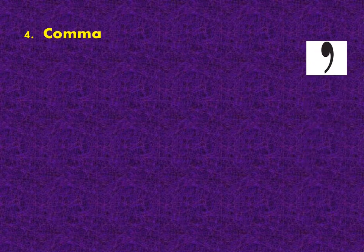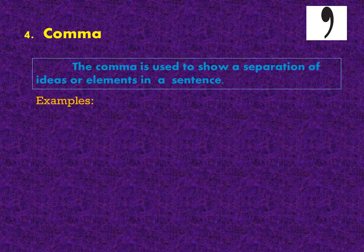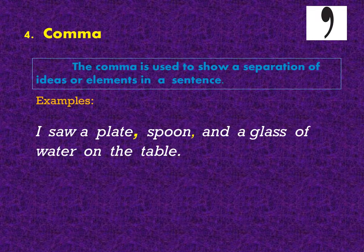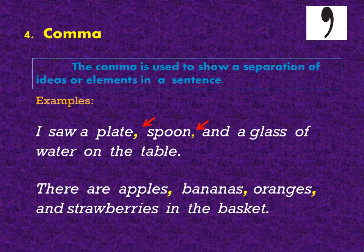Comma. A comma is used to show a separation of ideas or elements in a sentence. For example: I saw a plate, spoon, and a glass of water on the table. There are apples, bananas, oranges, and strawberries in the basket.